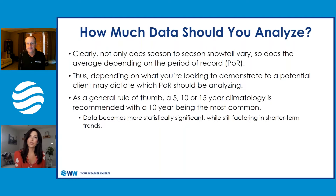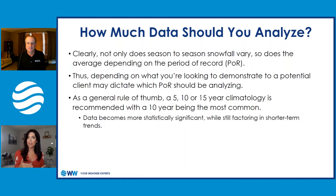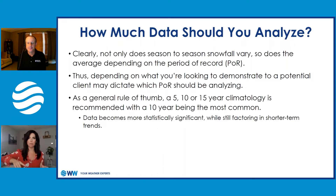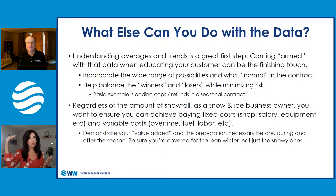It's all about how much data you should really analyze. Not only does season-to-season snowfall vary, so does the average depending on the period of record — we abbreviate that as POR. Depending on what you're looking to demonstrate to a potential client, it may dictate which period of record you should be analyzing. As a general rule of thumb, a 5-, 10-, or 15-year climatology is recommended, with a 10-year being the most common. Data becomes more statistically significant while still factoring in shorter-term trends when you use that 10-year period. With a 5-year, there's just so much variability, but it can help with your cap or floor on a seasonal contract. With 10 years, variability is going to smooth out just a little bit more.